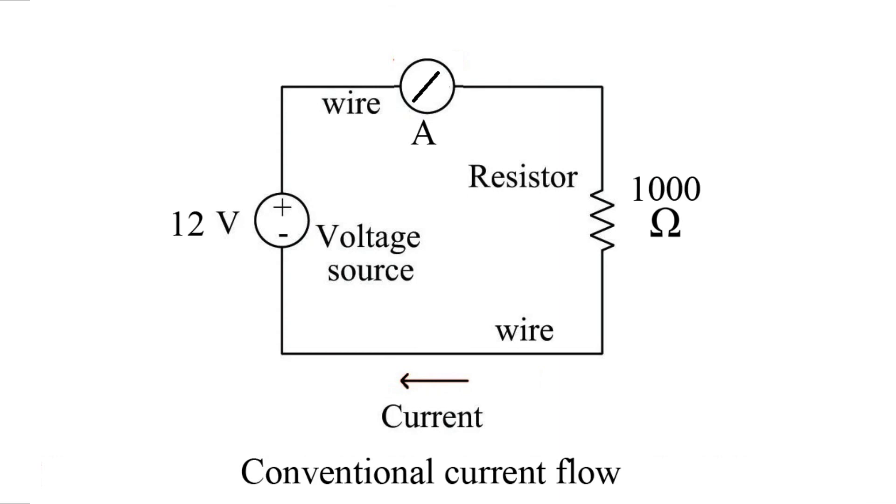So let's start out with something simple. We've got a 12 volt battery, we've got a 1000 ohm resistor. What's the total current in the circuit? Well, we're trying to find out current, so it's going to be I equals V over R. So we have 12 volts divided by 1000, and that's going to give us 12 milliamps. It's just that simple.